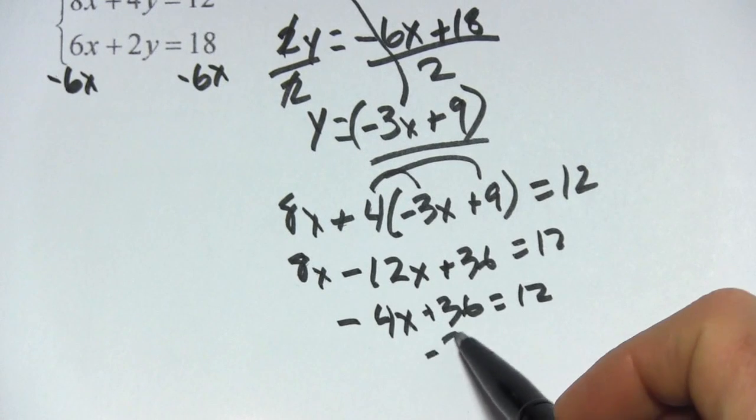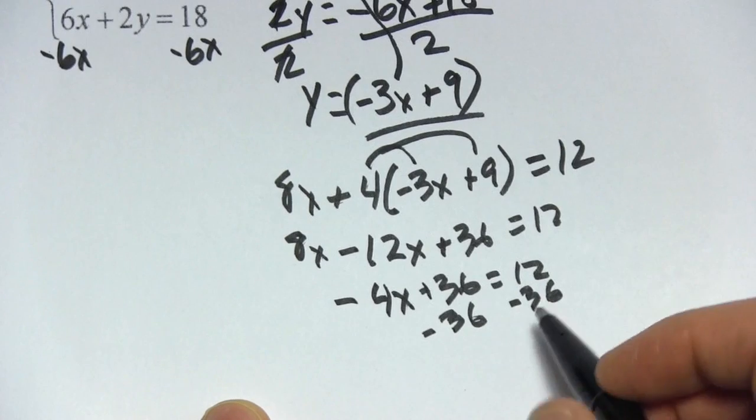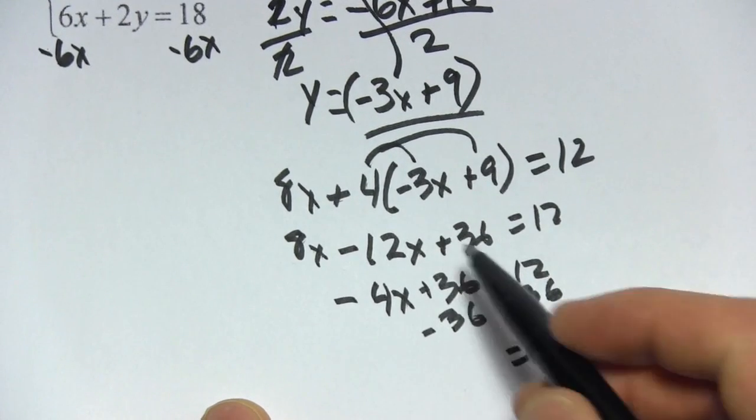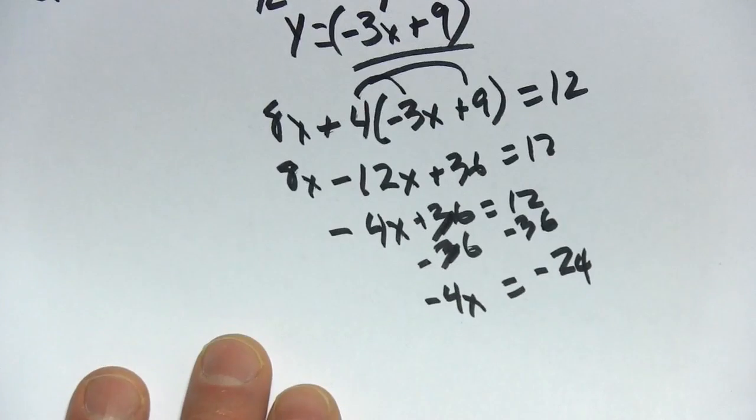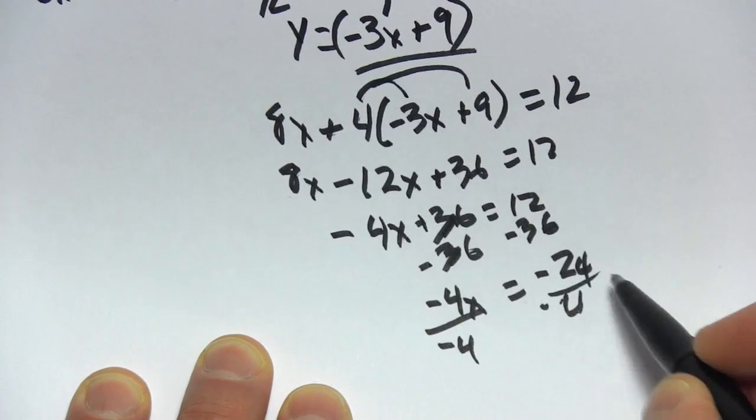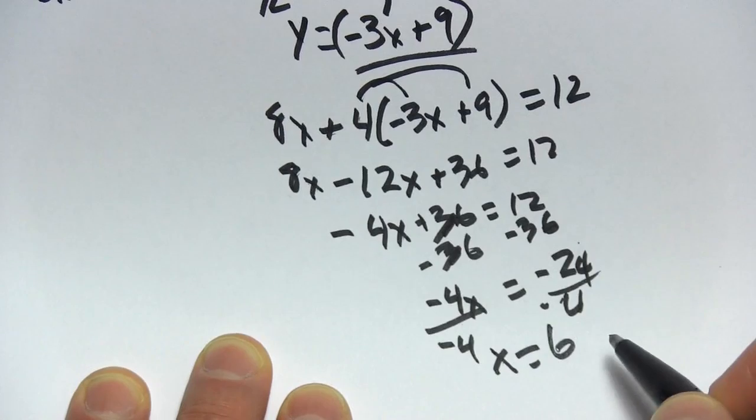And then we have to subtract this 36 from both sides. So I think that's going to leave over here a negative 24. And over here, just a negative 4x. And we can divide by negative 4 both sides. And we would get x equals, and this will be a positive, 6.